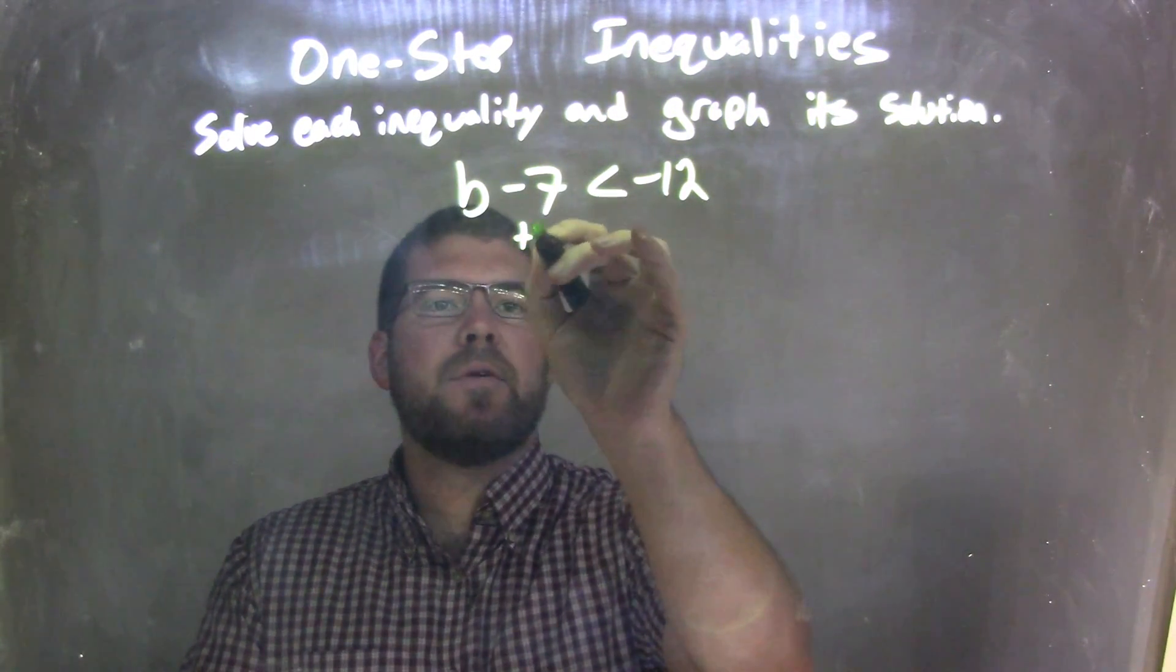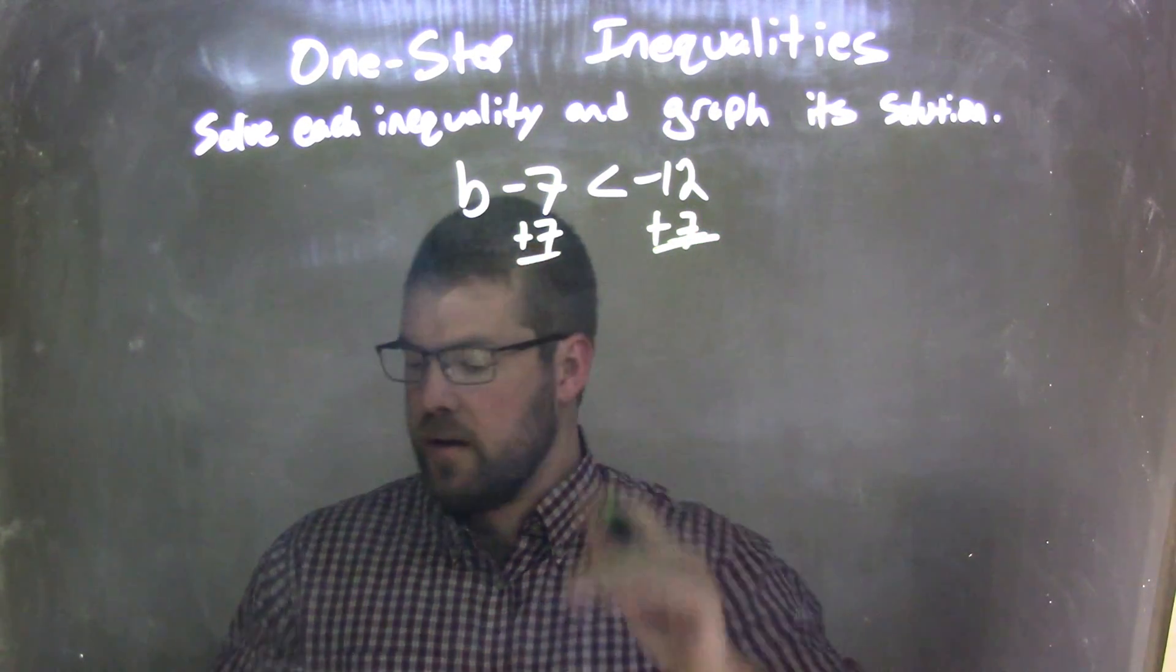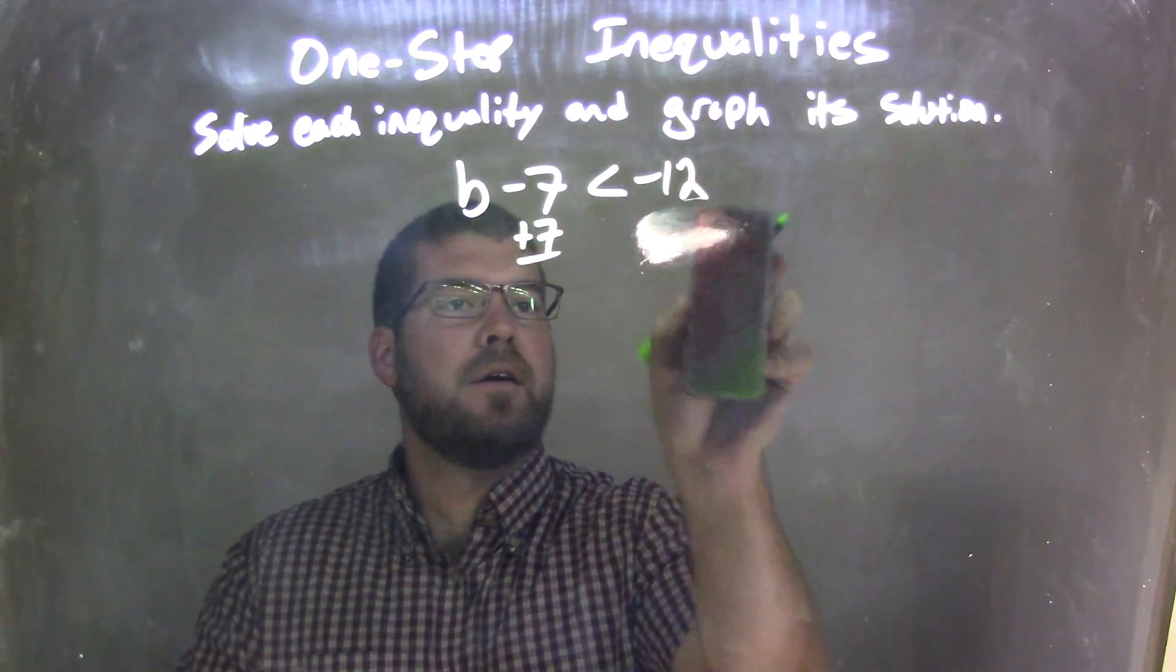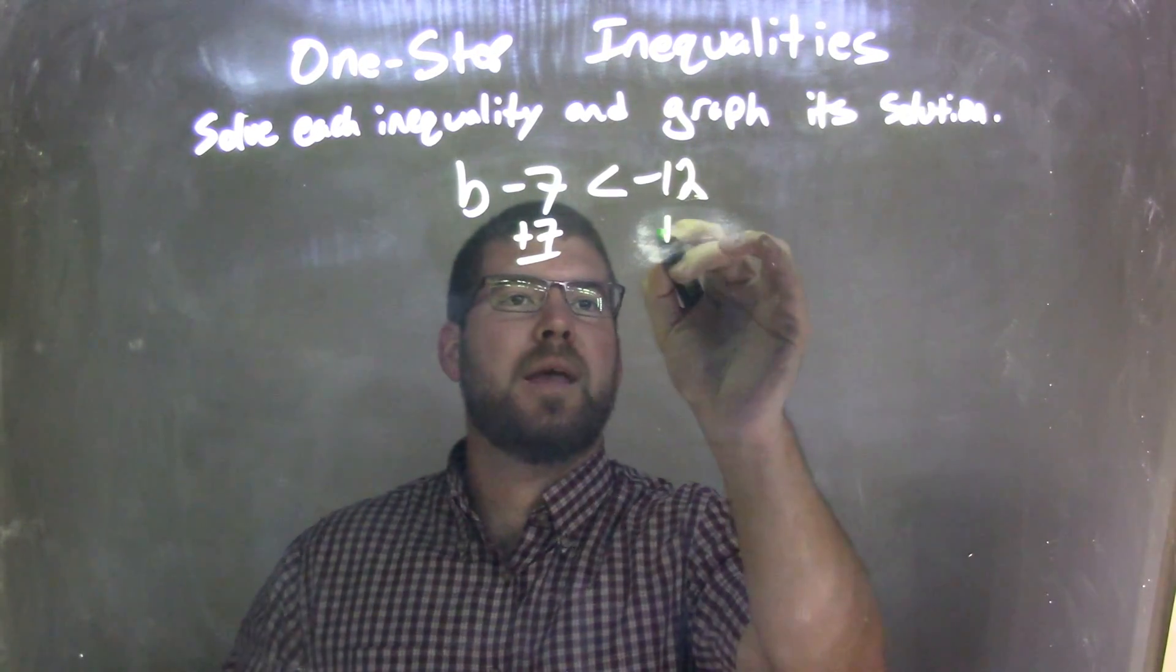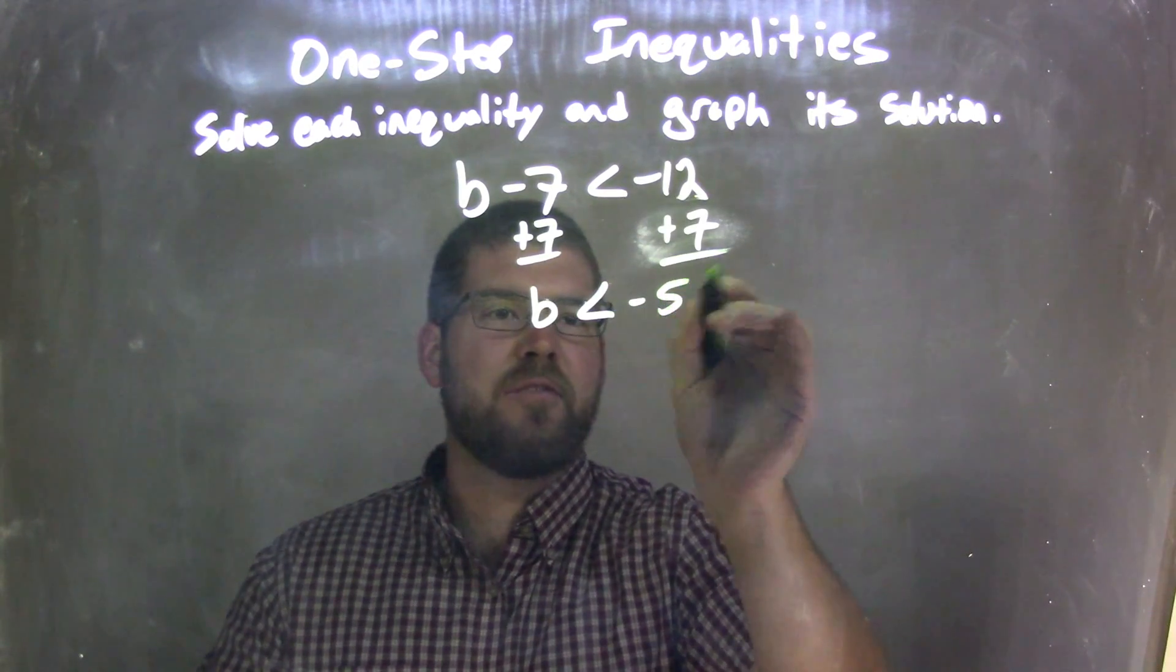I'm going to add 7 to both sides. And what that gives me is b is less than negative 12 plus 7, which is negative 5.